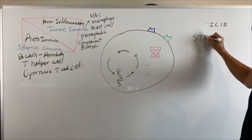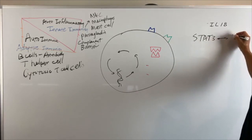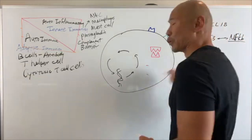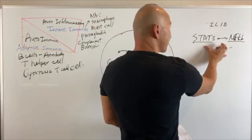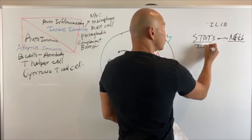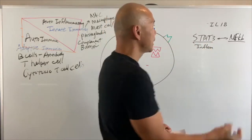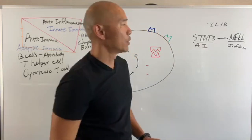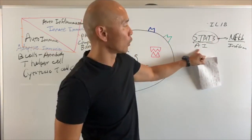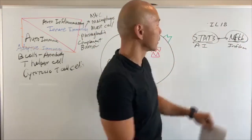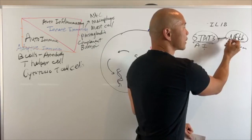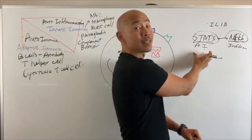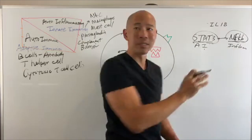We have STAT-3 triggering NF-kappa B. These are triggers for inflammation, and this is the trigger for autoimmune disease. When one chemical is released, it triggers autoimmune disease; when the other is released, it triggers inflammation. The more autoimmune chemicals you have, the more it stimulates NF-kappa B, and they start to stimulate each other. When you have autoimmune disease you get inflammation, and when you have inflammation you get autoimmune disease.